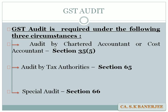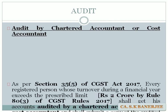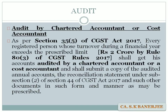We will cover all three types of audit. The first is audit by a Chartered Accountant or a Cost Accountant under Section 35 subsection 5 of the CGST Act 2017. Every registered person whose turnover during a financial year exceeds the prescribed limit shall get his accounts audited by a CA or CMA and shall submit a copy of the audited annual accounts along with a reconciliation statement under Section 44 in the prescribed form.